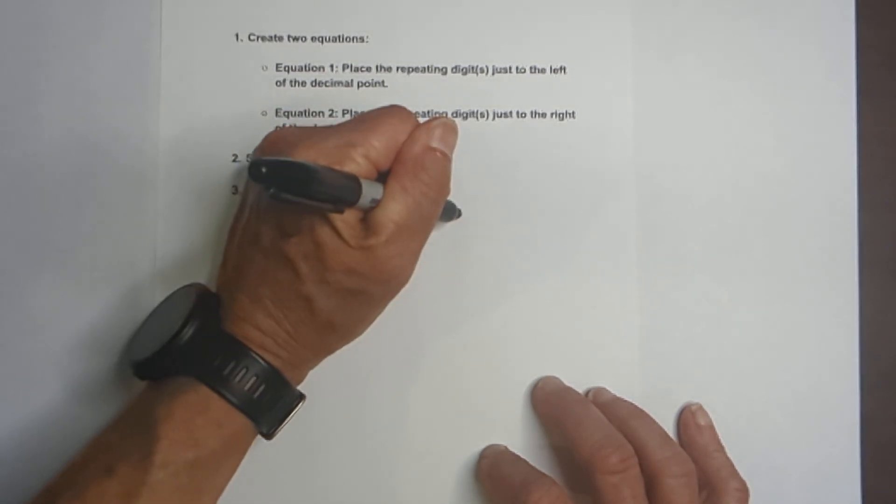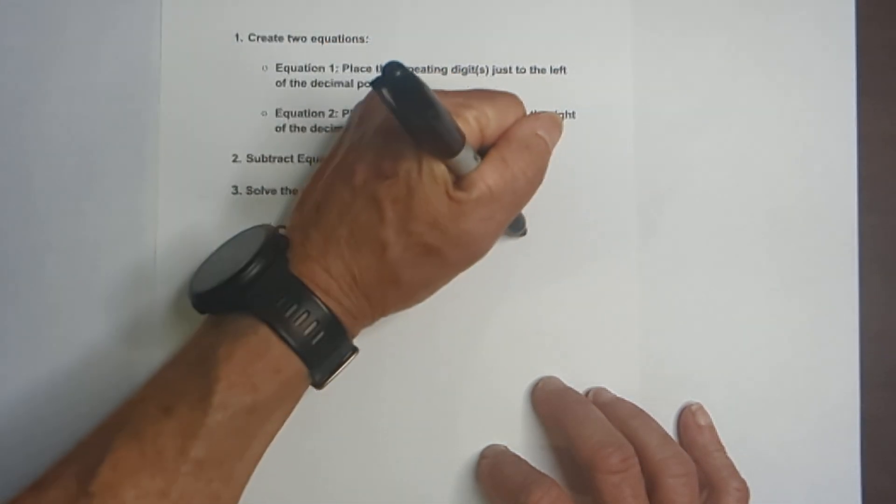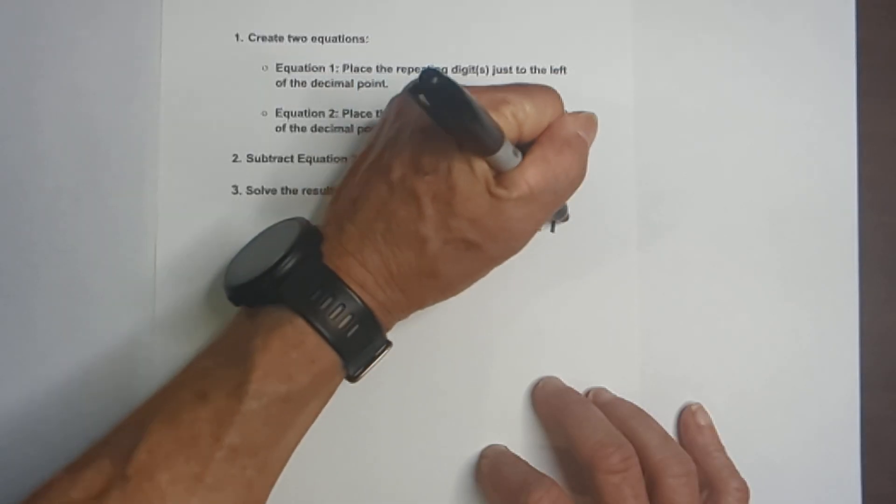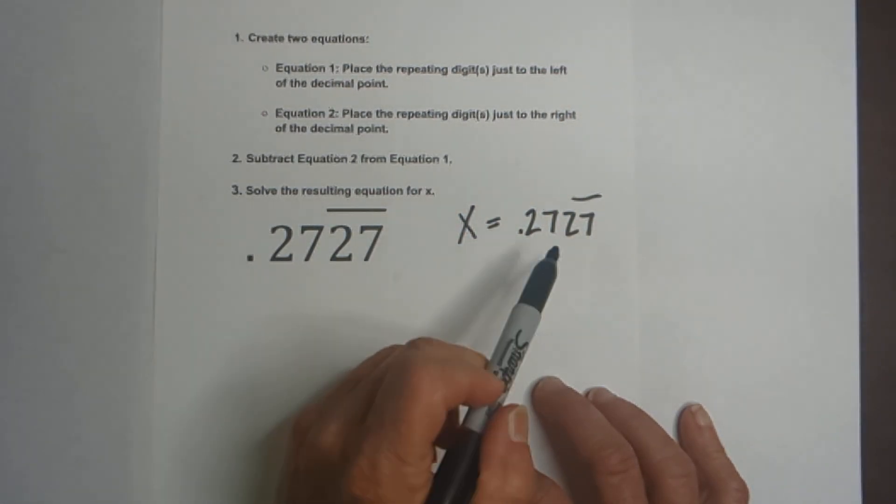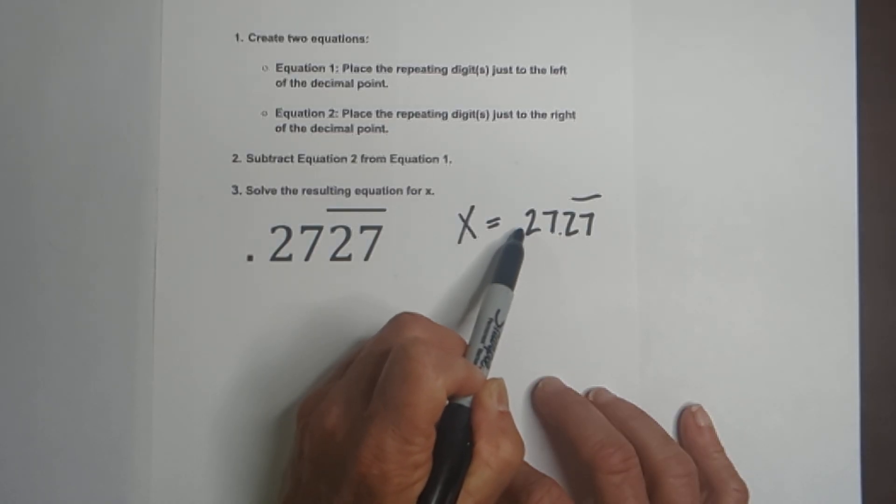Okay, let's first set this equation. We have x is equal to 0.2727 repeating. Equation one, the repeating two digits are 2727. So we need the decimal point right here. And in order to move it two places, we can multiply it by 100.